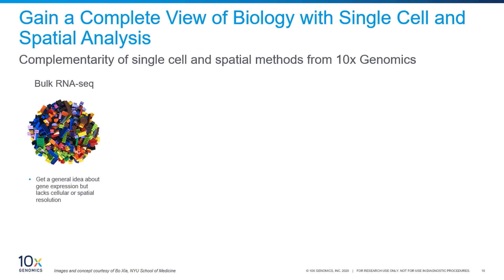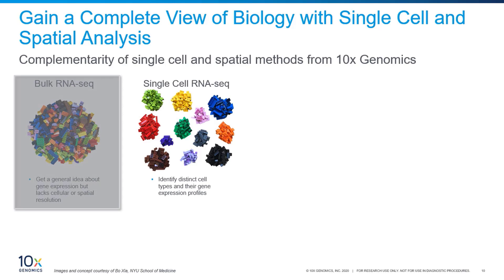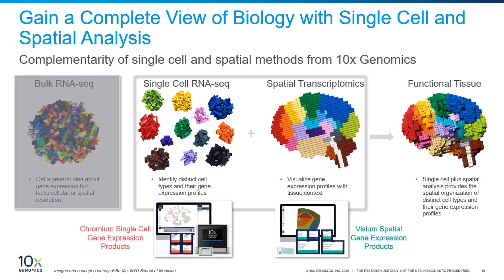At 10x Genomics we see our single-cell and spatial technologies as complementary, as they enable one to gain a more complete view of biology. In this illustration we draw parallels to building blocks: with bulk RNA-seq you get a general idea of gene expression as essentially one single data point. With single-cell RNA-seq you collect transcriptomic information for each individual cell and can classify them into distinct cell types or clusters. For spatial transcriptomics you can visualize gene expression profiles within the context of the tissue. Combining both analyses in parallel allows you to spatially organize distinct cell types and study their gene expression profiles, improving the picture quality of biological information within your tissue section of interest.